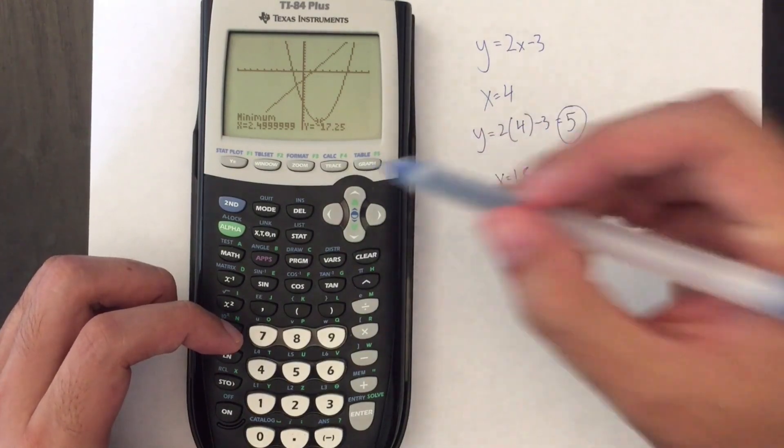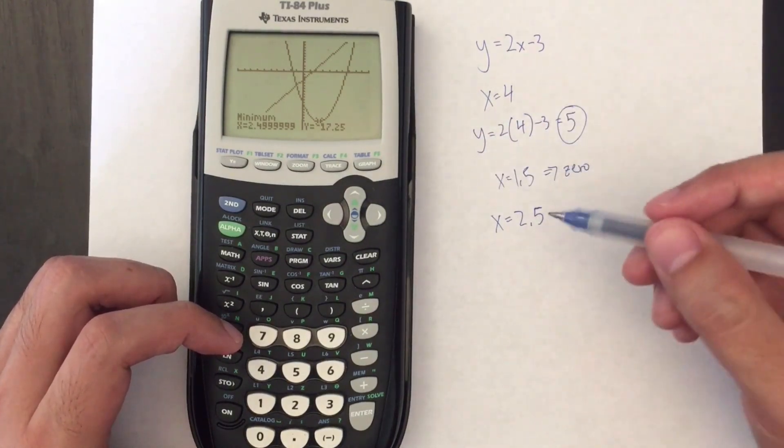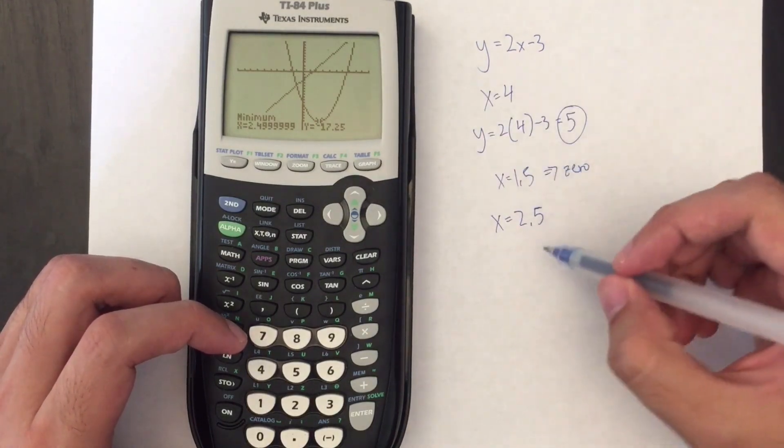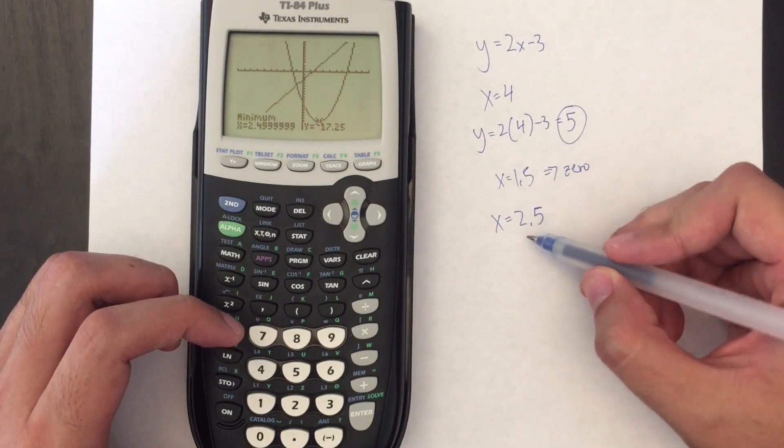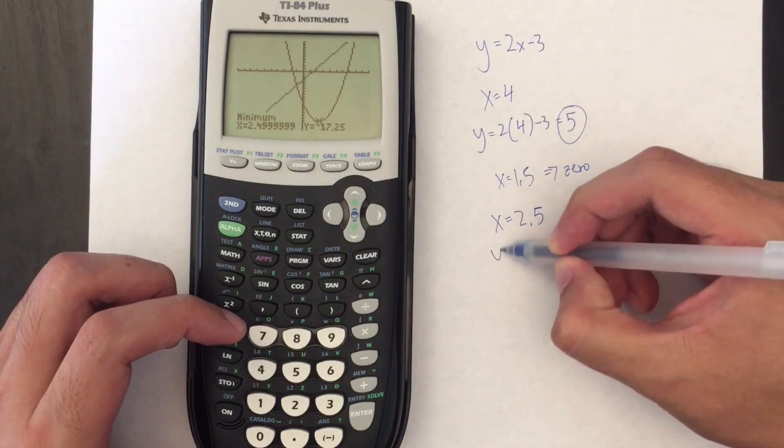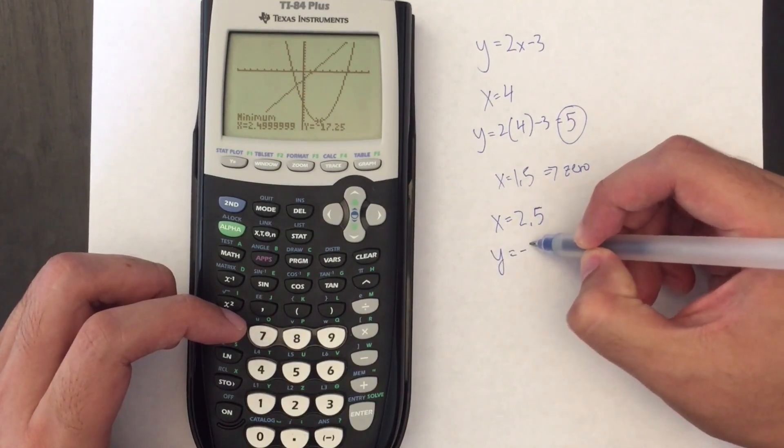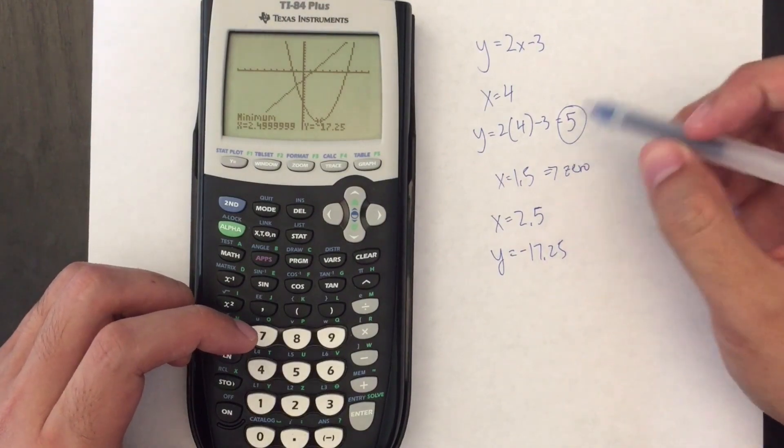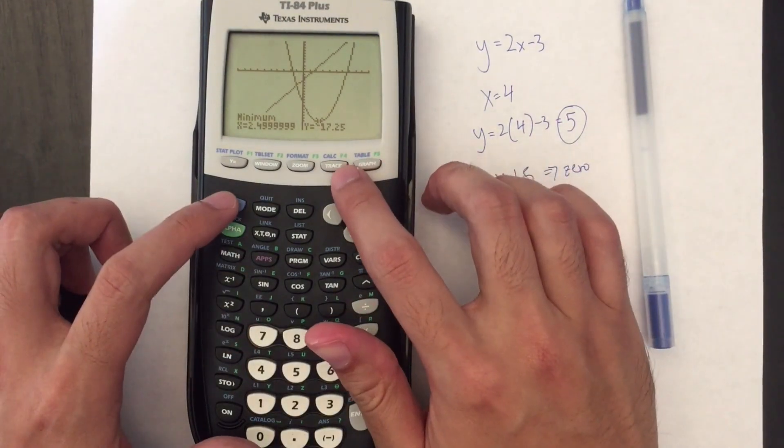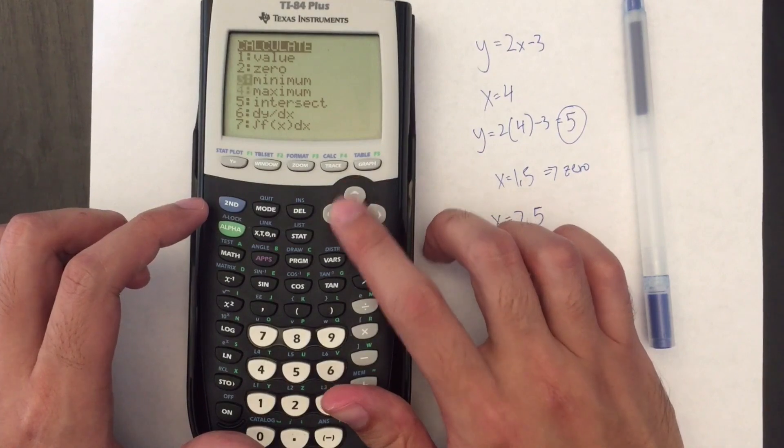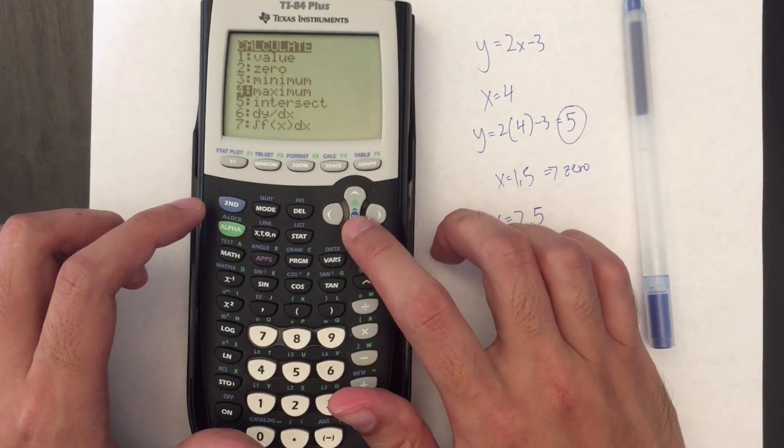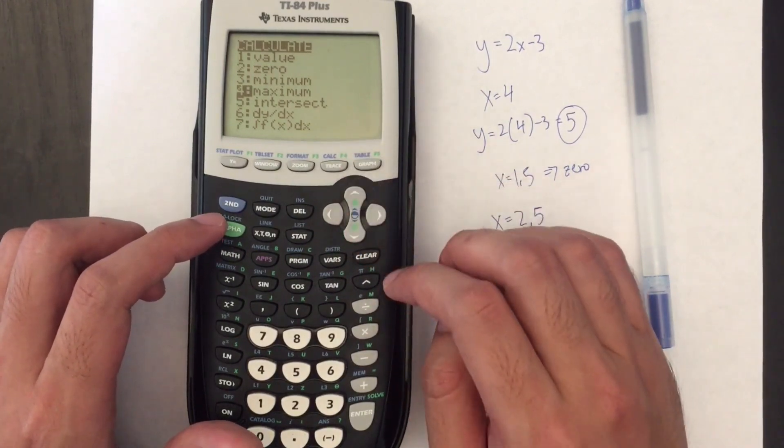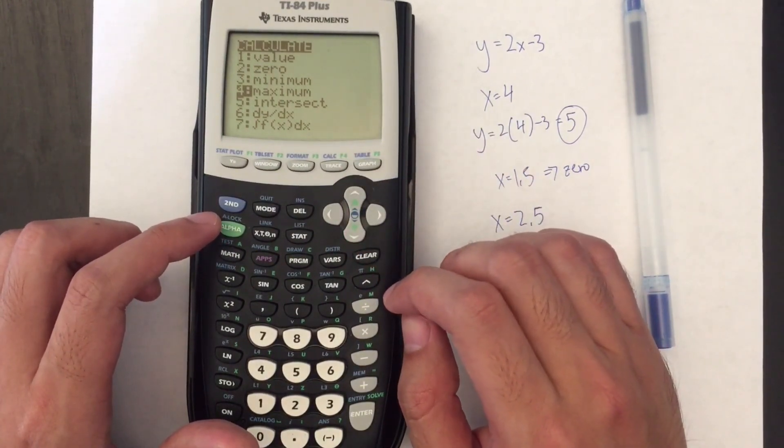And it gives me 2.4999 repeating which is 2.5. Sometimes it won't give you the exact value because it's approximating from a graph, but you can pretty much be assured that it is 2.5 and then the y coordinate is negative 17.25. So these are the coordinates of our vertex. So going back to our calc menu we won't find the maximum here, we don't need to, but if we had a parabola that was an upside down u you might use the maximum to find the vertex in that case.